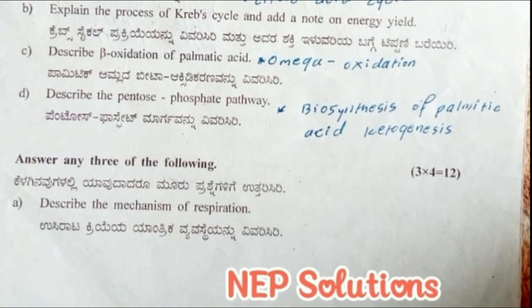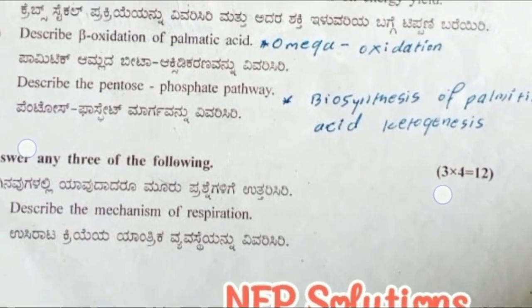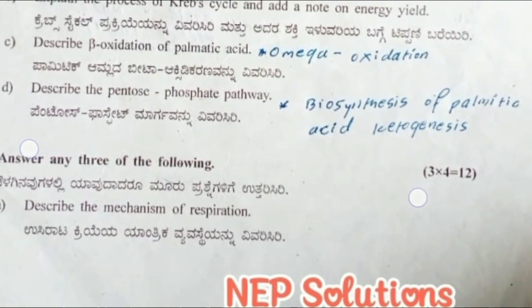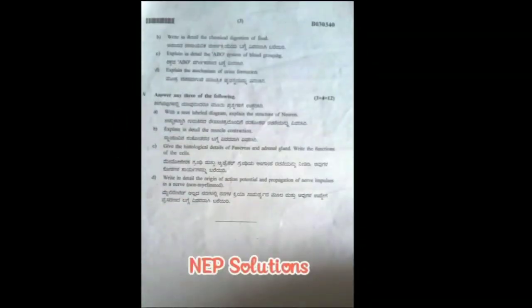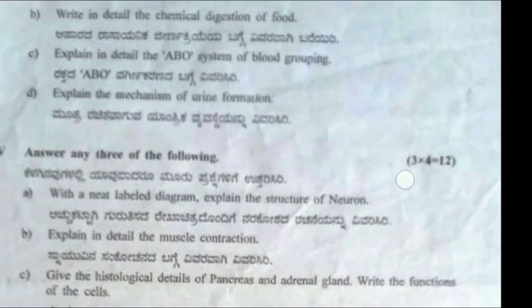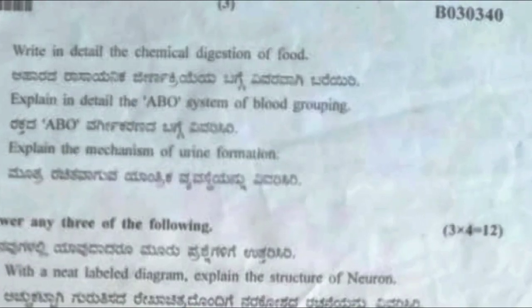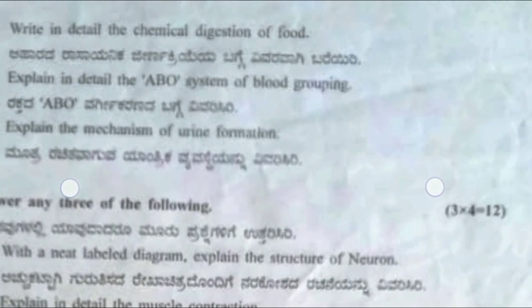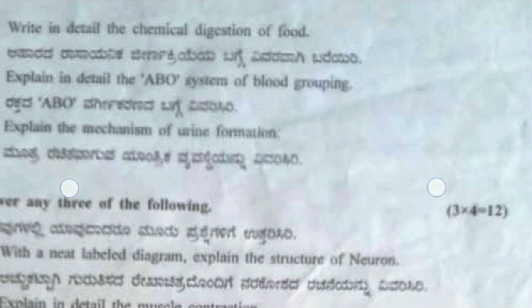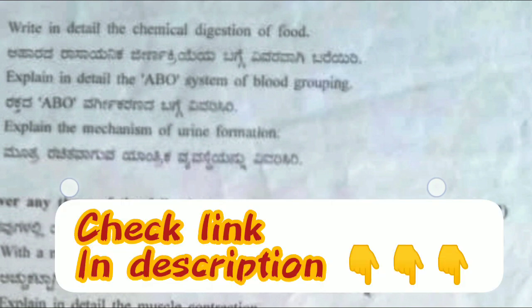The first question is: describe the mechanism of respiration. The next question is: write in detail the chemical digestion of food. The next question: explain in detail the ABO system of blood grouping. It is the most important question for your upcoming exam, and I have given the link in the description box — check that also, I have uploaded a video on that as well.